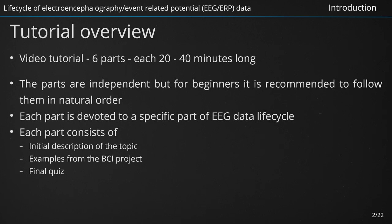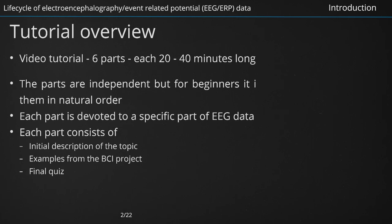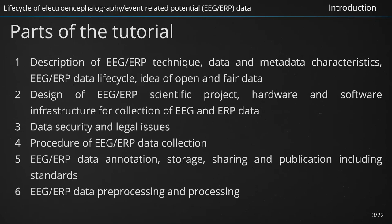Each part of the tutorial includes a general initial description of the topic followed by specific examples given on the data obtained from a real brain-computer interface project. At the end of each part, a short quiz is given to you. Six parts of the tutorial cover the following topics related to EEG and ERP data life cycle. The first part brings a brief description of the techniques of EEG and ERP, characteristics of EEG data and metadata, description of the whole data life cycle, and emphasizes the idea of open and fair data. It also serves as a basic overview of the next parts of the tutorial.